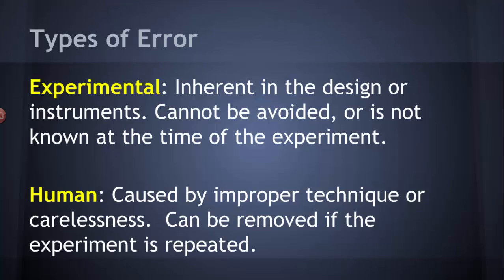So there are two types of error that you need to be aware of. One is experimental error. Experimental error is error that is inherent in the design or the instruments. It's something you can't avoid or maybe you don't even know that it's there when you do the experiment.